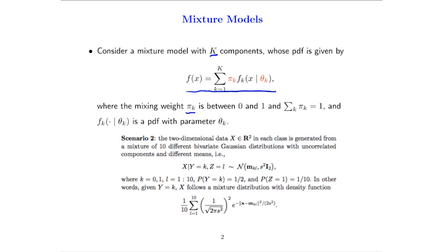The PDF of a mixture model is a weighted summation of K PDFs where the weights are π_k's. Each π_k is between 0 and 1, and they sum to 1. Each individual f_k is a probability density function with parameter θ_k.